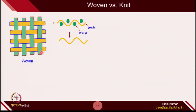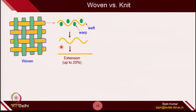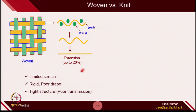Also, if you try to stretch these fabrics, maximum the crimps or kinkiness will just become straight. So even if you give force to this type of fabric, the extensibility is not that significant — maximum up to 20 to 30 percent, you can extend these woven structures. Whenever you encounter a woven structure, it has very limited stretch compared to knit, it is extremely rigid, and because of that rigidness, it cannot fit to any 3-dimensional shape or structure. It is extremely tight, so it has very poor transmission compared to a knit structure.